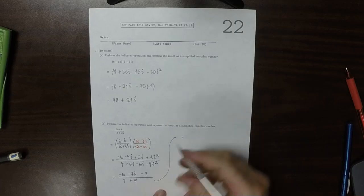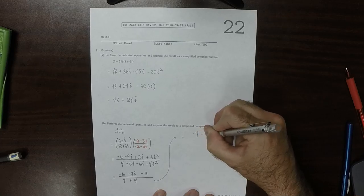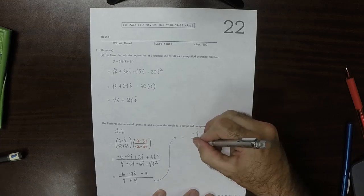So negative 6 minus 3 is negative 9 minus 7i, and then over 13.